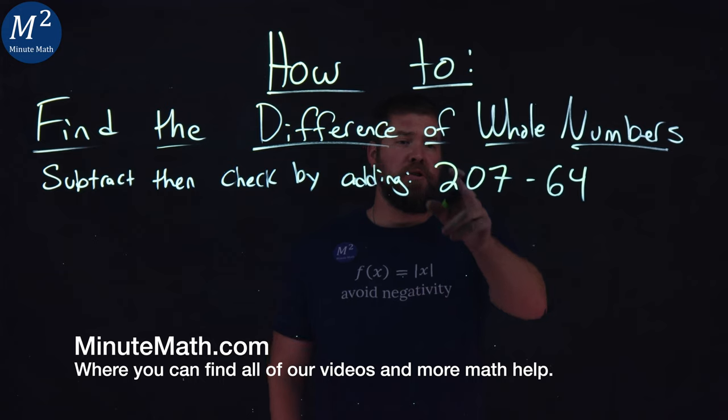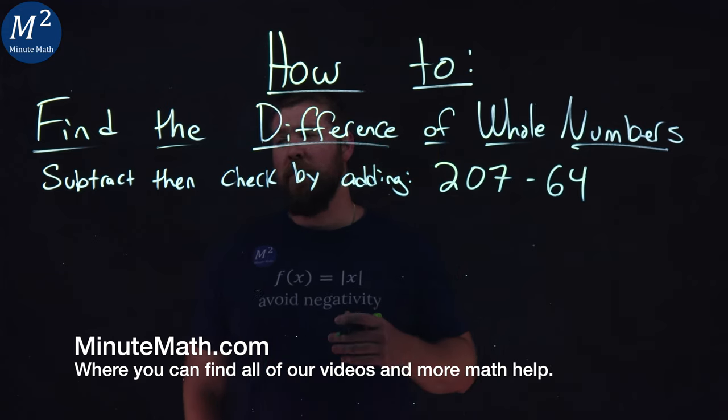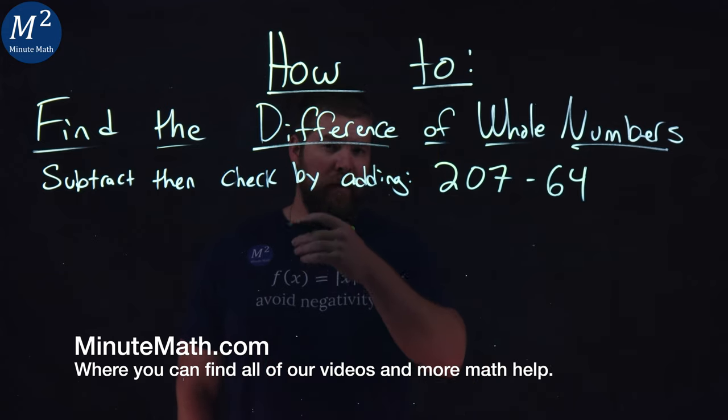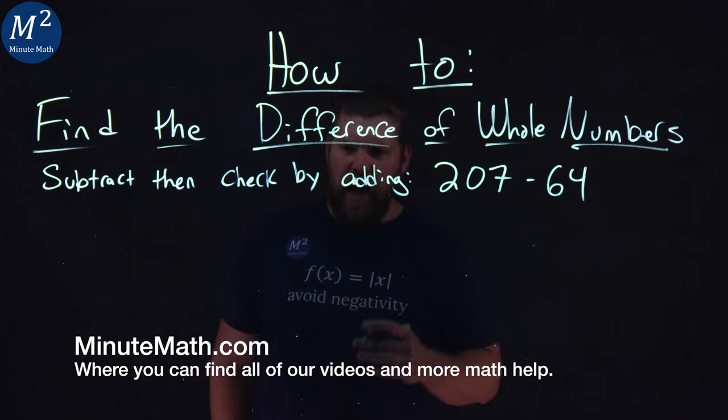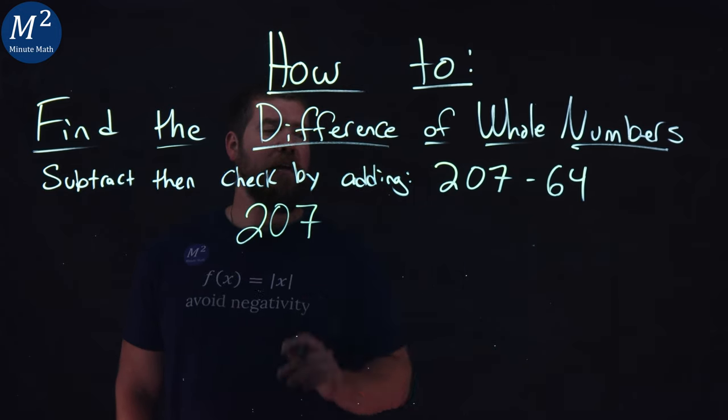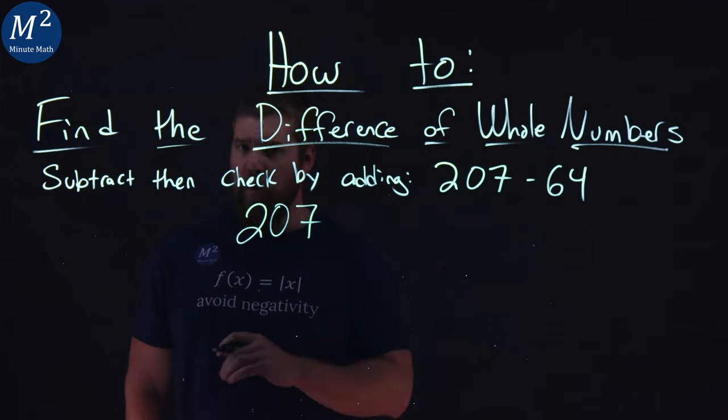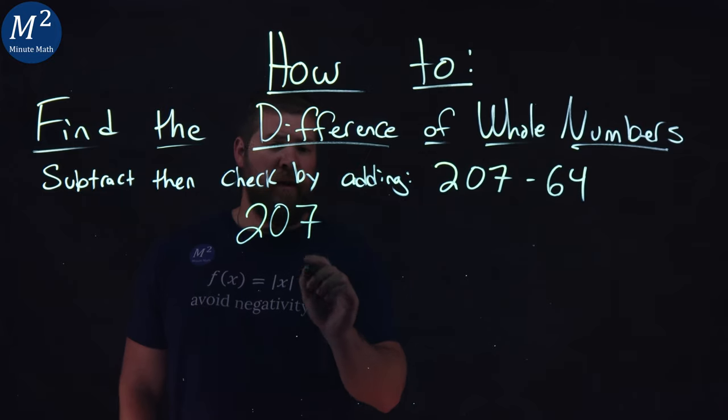We're given our problem here: 207 minus 64. We've got to subtract them and check by adding. I'm going to take 207, and underneath it I'm going to write 64, making sure our place values line up. Four here in the ones, six in the tens.